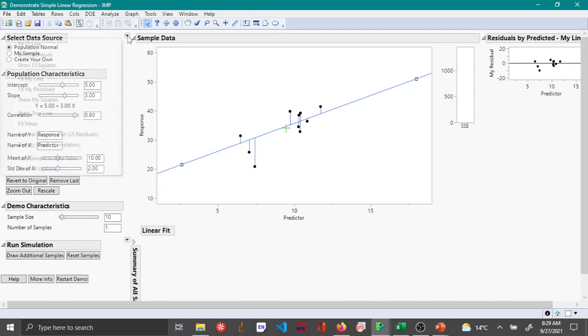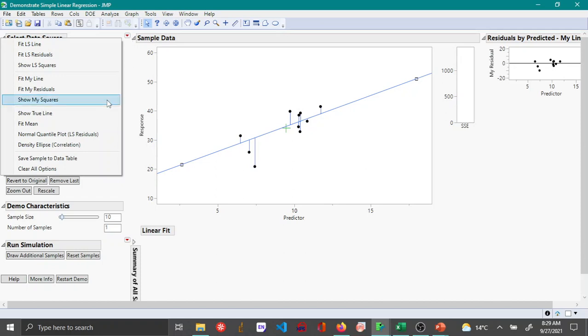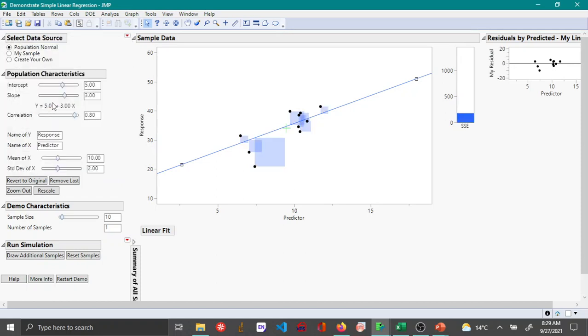What you will want to do is try to minimize the sum of squares. If you click on the red triangle option here again, you can see Show My Squares. Here you can see this is the sum of squares. In principle, all the software tries to do is try to minimize the sum of these squares, which is shown here as the blue bar.